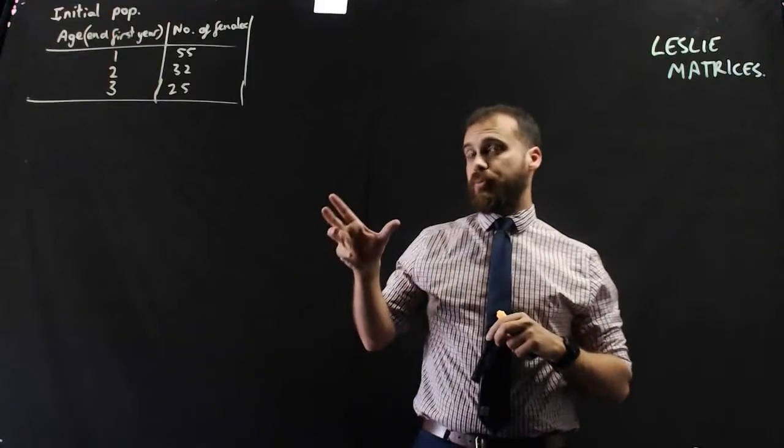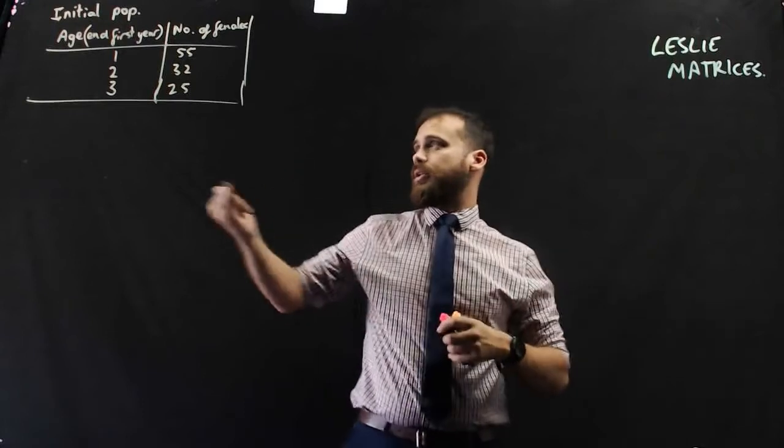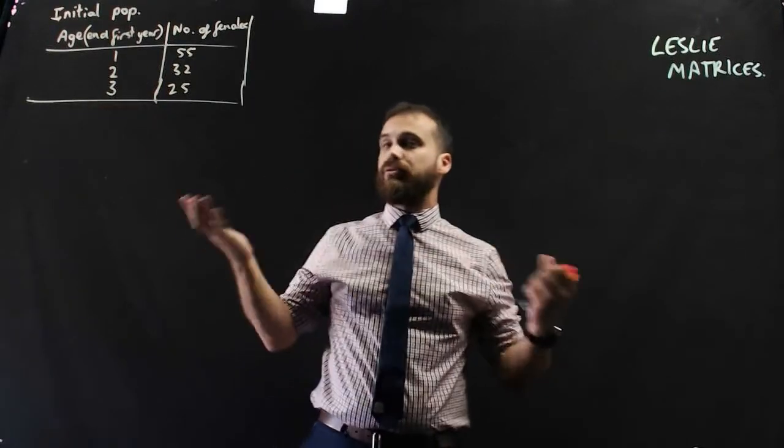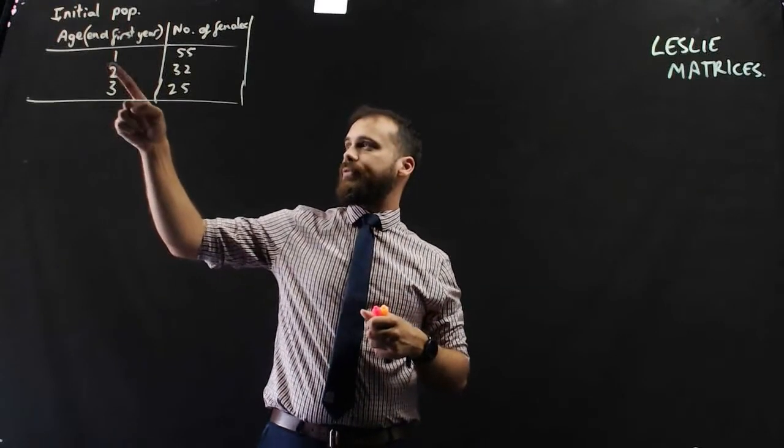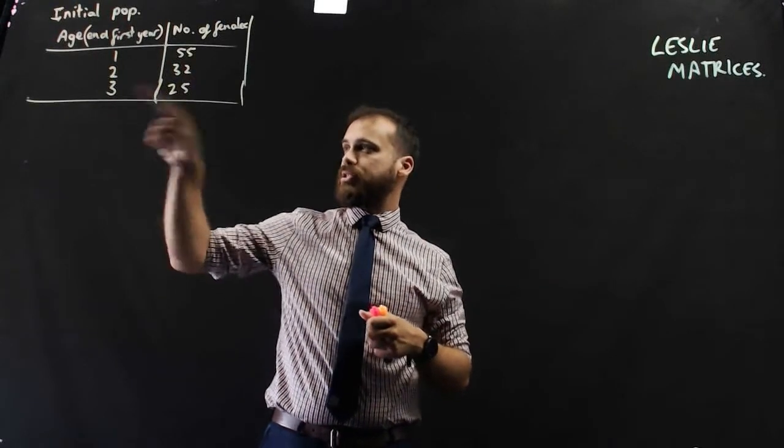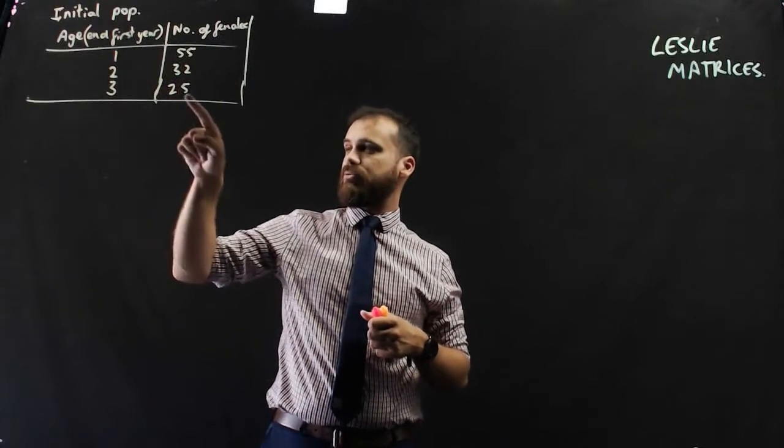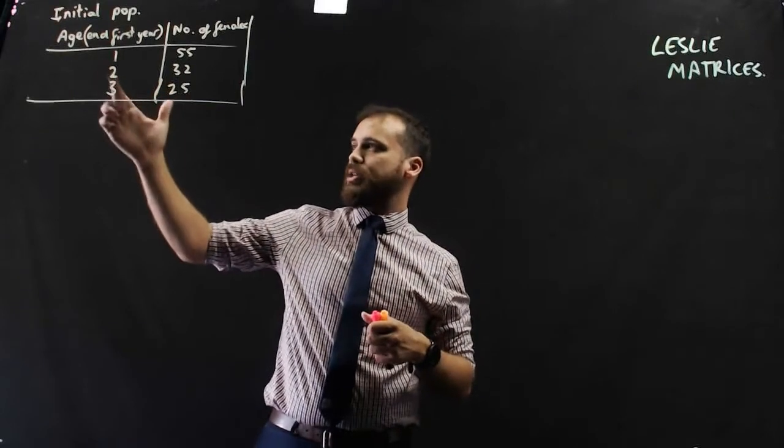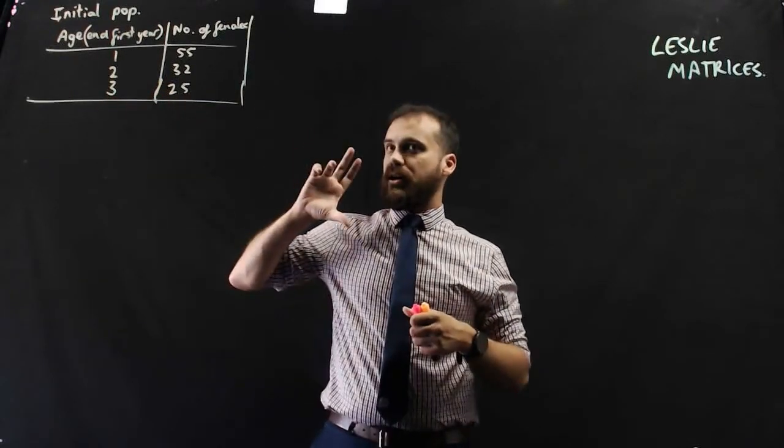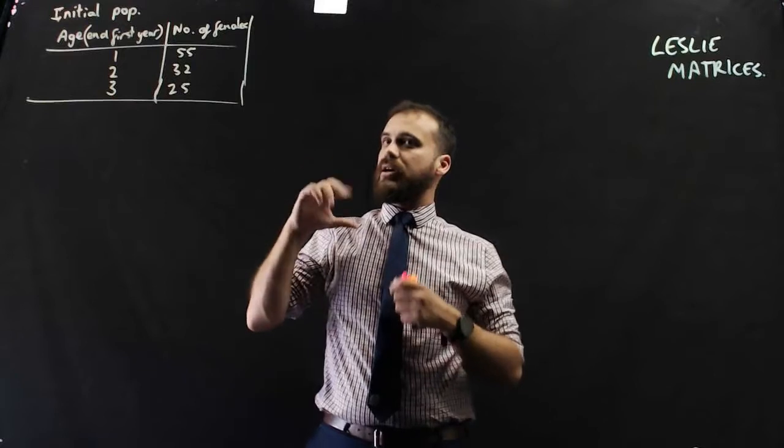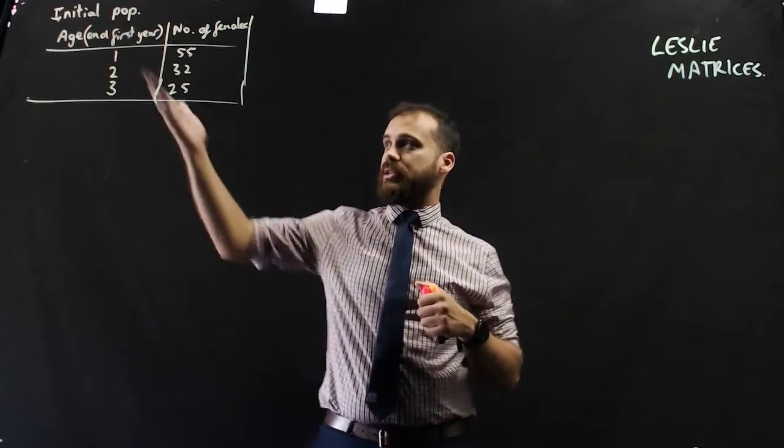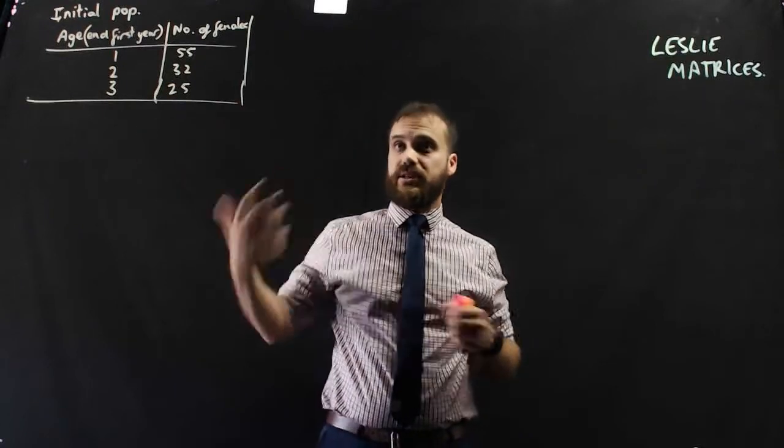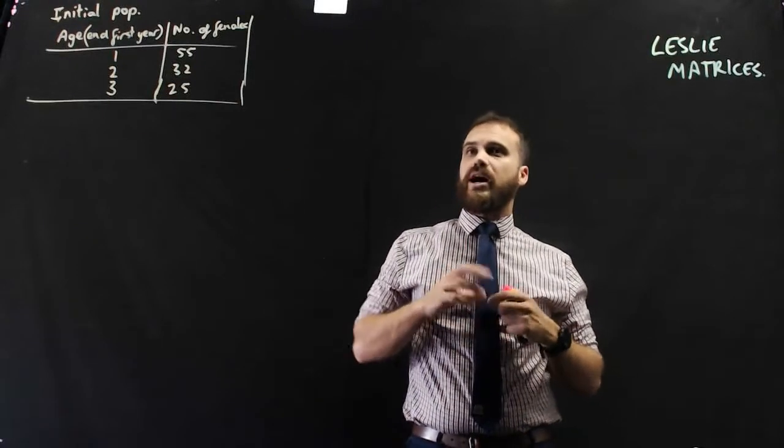Let's look at the initial population first. These are the ages at the end of the first year of our rats. There are 55 one-year-old rats, 32 two-year-old rats, and 25 three-year-old rats. We've put them into age brackets because their reproduction rates at different ages will be different, and also their survival rates at different ages will be different. This is going to give us a more accurate picture.